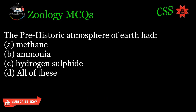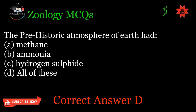The prehistoric atmosphere of Earth had: A. Methane, B. Ammonia, C. Hydrogen sulfide, D. All of these. Correct answer: D.